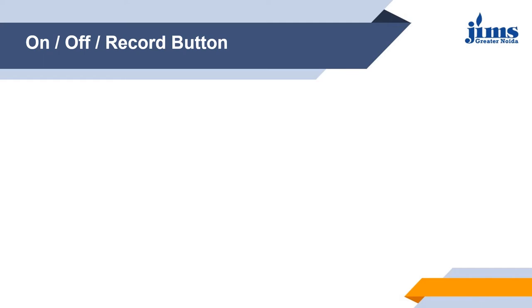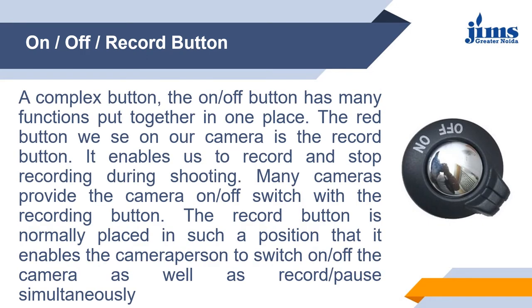The first one is the on/off or record button. As you can see in the image, the on/off button has many functions put together in one place. Normally we use what we call a red button in our camera — that is the record button. It enables us to record and stop recording during the shooting. Many cameras combine the on/off switch with the recording button, placed in a position that enables the camera person to switch on or off as well as record and pause simultaneously.